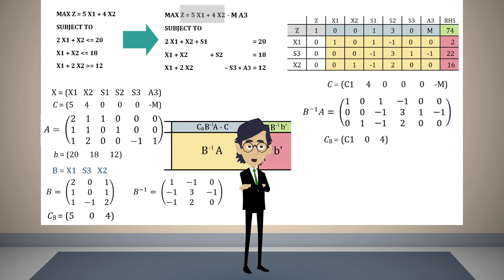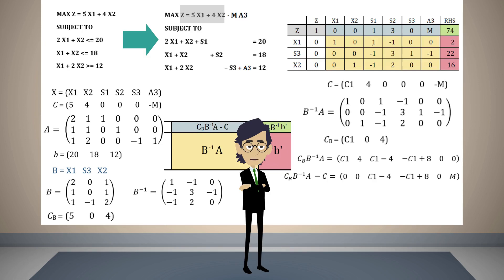Multiplying the basis coefficient vector by B-inverse times A, we obtain a result vector. From this vector we subtract vector C. These values must be greater than or equal to zero, giving the conditions: c1 minus 4 ≥ 0 and minus c1 plus 8 ≥ 0. It can be observed in the graph that the interval in which both inequalities are satisfied is the interval [4, 8].